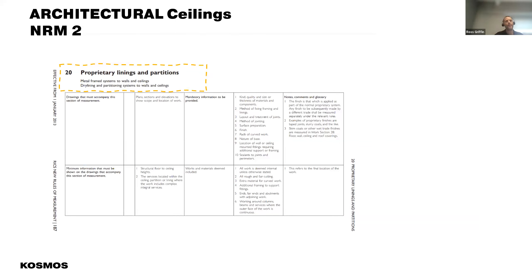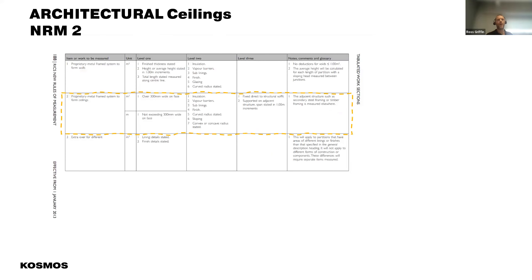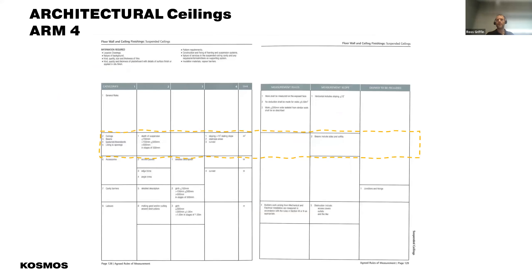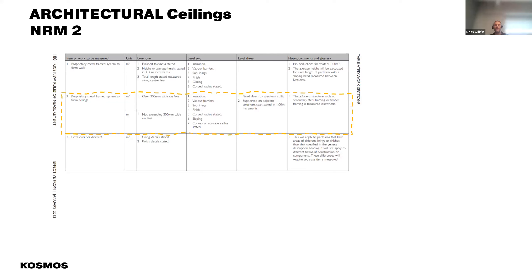Taking ceilings as an example using NRM2 — partitions and ceilings, metal frame etc. The requirements around measurement: if it's over 300mm it's square metre, if under it's per metre. Certain elements at level two need to be identified — insulation, vapour barrier etc. Some of that comes from the specification; others might be modelled, like whether it's sloped or curved. If you have that conversation with the design team you can extract the big quantities from the models, but the smaller elements not exceeding 300mm — we're not going to get those from the model. You'll have to manually measure or derive them.